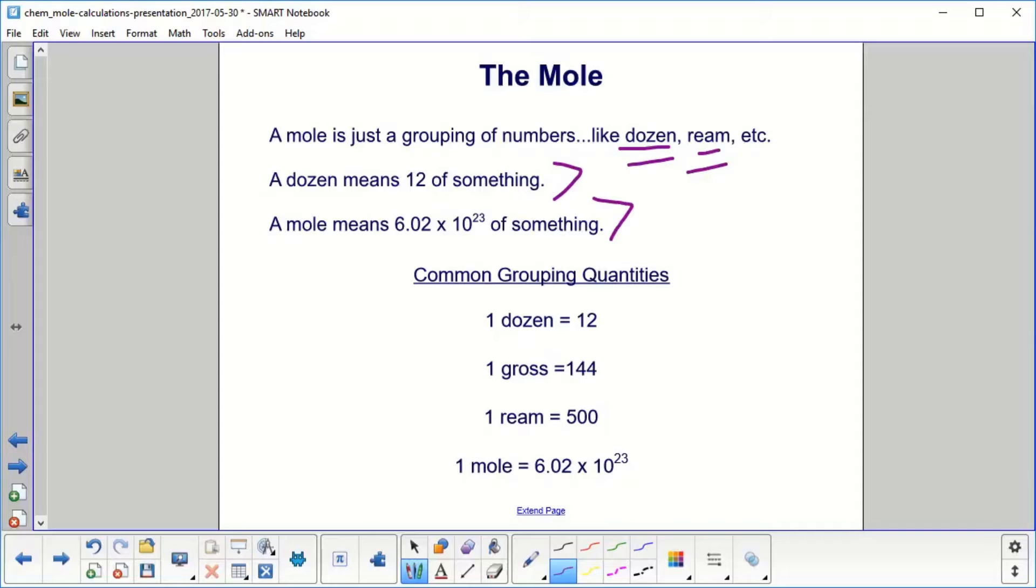So here's just a couple other quantities to make you feel more comfortable. Dozen is 12. Gross is 144. A ream is 500. When you buy paper for your printer, you get a ream. It's got 500 sheets in it. Excuse me, 500 sheets, not pages. And a mole is 6.02 × 10^23.